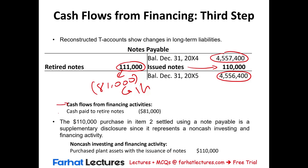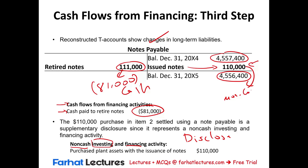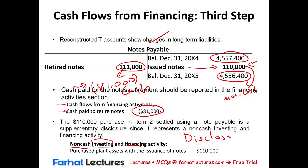Cash flow from financing activities for the retirement of the note is negative $81,000. The $110,000 plant asset acquired by issuing a note is a non-cash investing and financing activity — we disclose it but do not include it in the cash flow statement. So the retirement of the $111,000 note for $81,000 cash is the only cash item. We are done with notes payable.